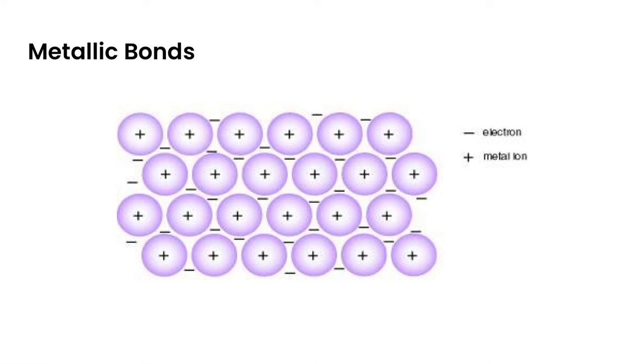In this video we're going to take a look at bonding in metals and use that structure of bonding in metals to explain some of their characteristic properties. So let's start with what is a metallic bond.